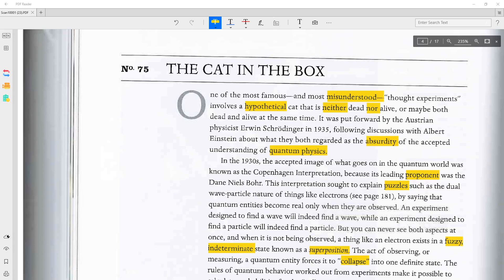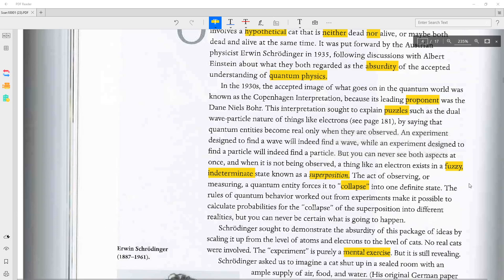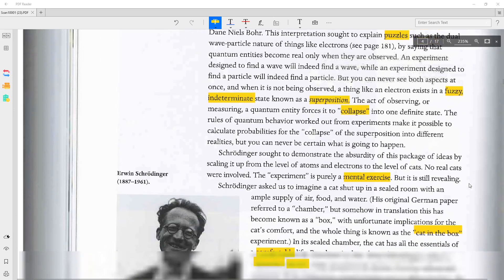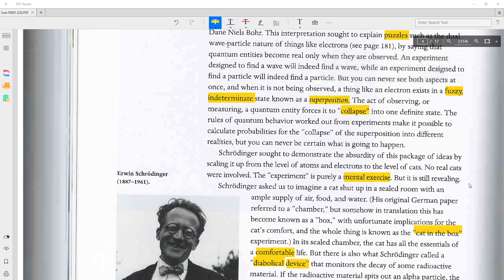By saying that quantum entities become real only when they are observed. An experiment designed to find a wave will indeed find a wave, while an experiment designed to find a particle will indeed find a particle. But you can never see both aspects at once, and when it is not being observed, a thing like an electron exists in a fuzzy, indeterminate state known as a superposition.